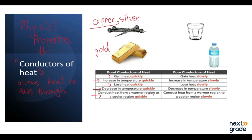Good conductors also conduct heat from a warmer region to a cooler region quickly. For example, if you have a metal and you are heating it from one side, the heat will travel to the cooler region — the area that is not being heated. So these objects are called good conductors of heat.